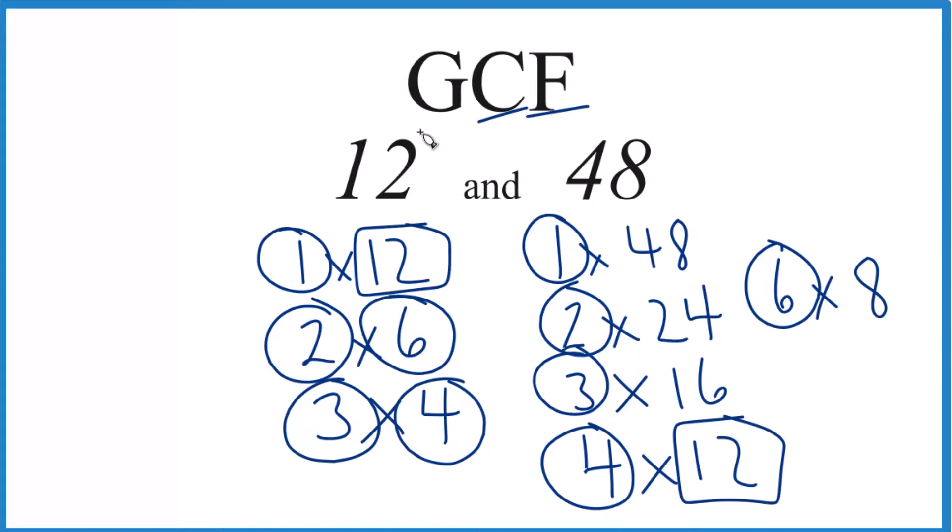So in answer to our question, the GCF, the greatest common factor for 12 and 48 is 12. That's it. This is Dr. B, looking at the GCF for 12 and 48. You could use other methods like prime factorization, but this works pretty well unless you have pretty big numbers. Thanks for watching.